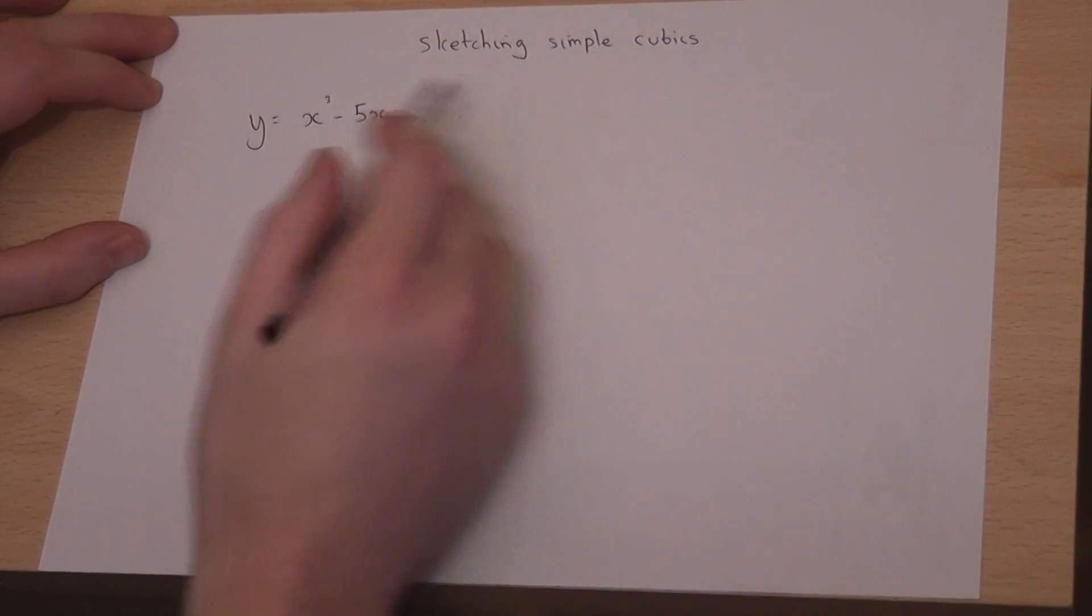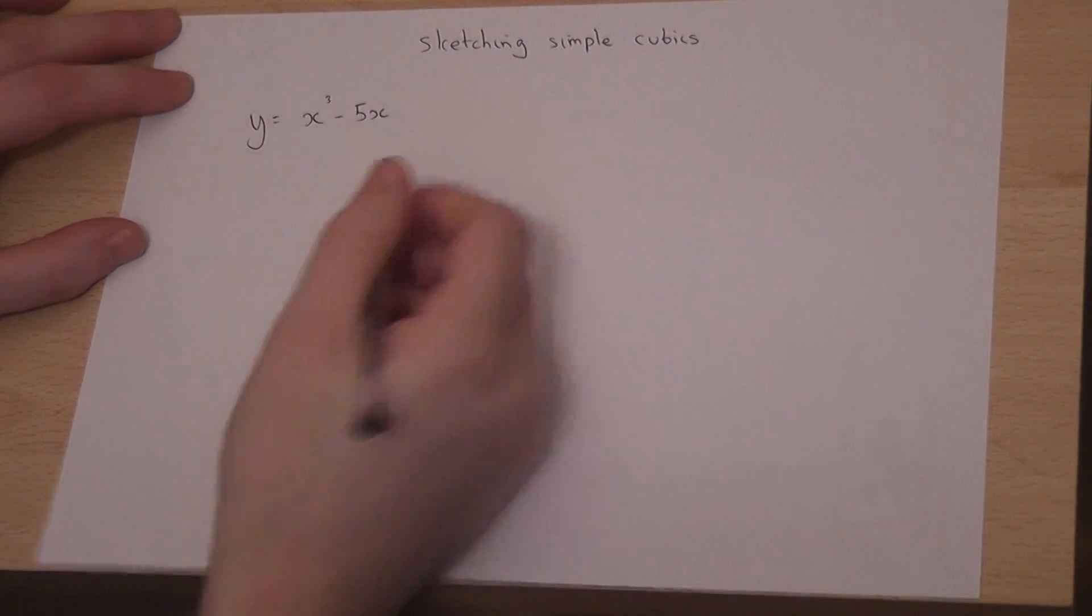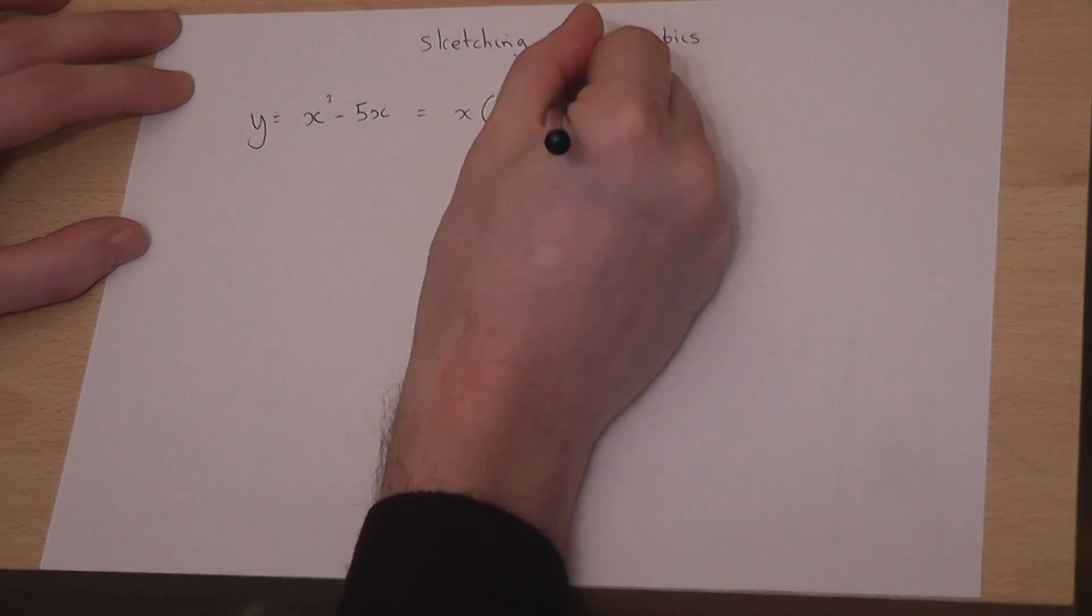This video looks at how to sketch simple cubics. Now this is simple because it factorizes to become x bracket x squared minus 5.